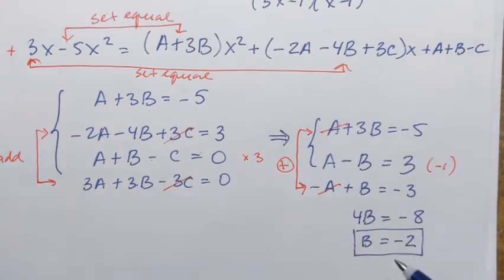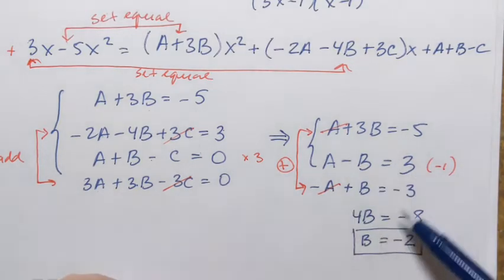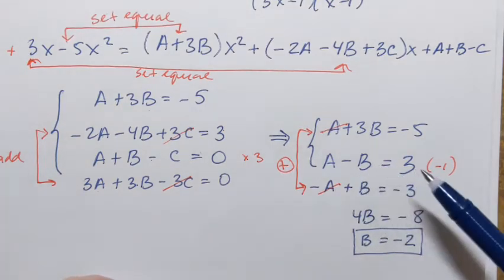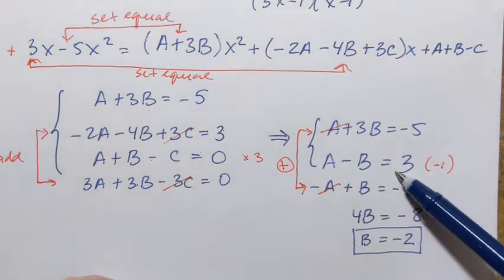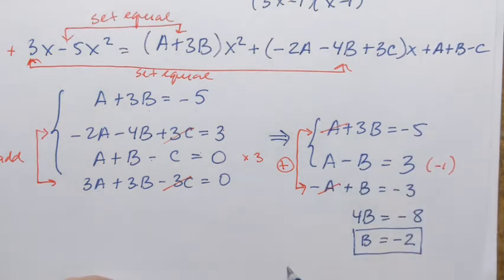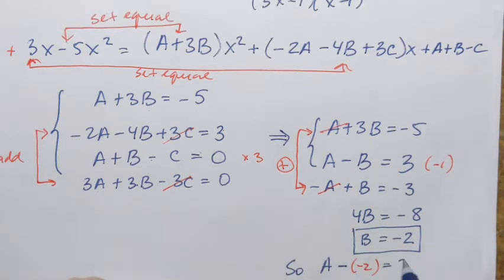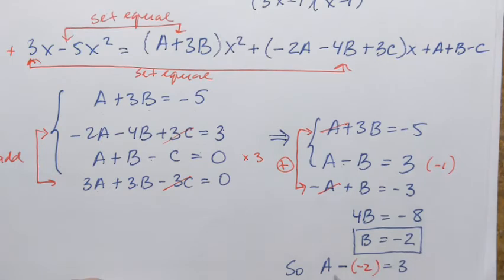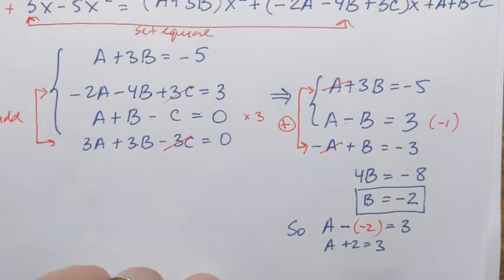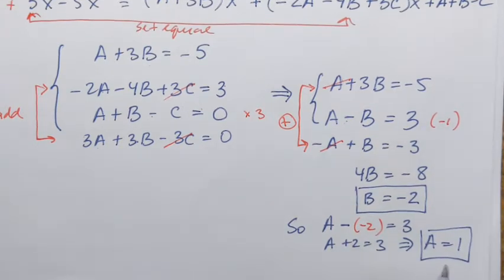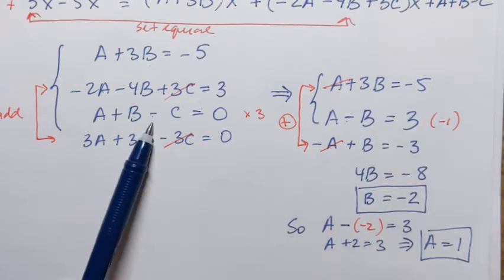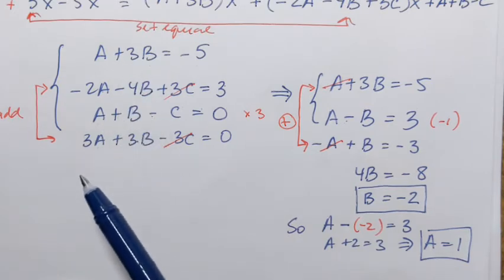We found b equals negative 2. Once you find one constant, stay within that same system and use it to find the second constant. Using the second equation (a minus b equals 3): a minus (negative 2) equals 3, so a plus 2 equals 3, giving a equals 1.